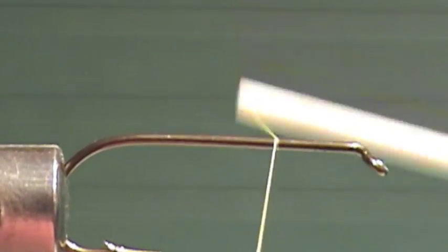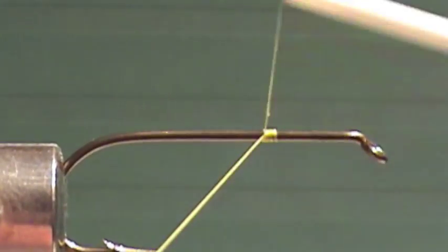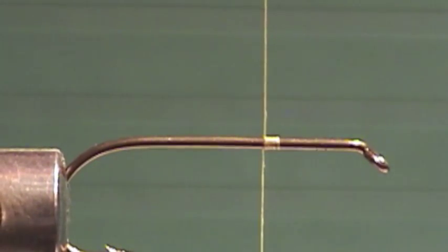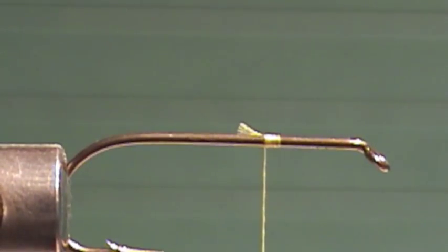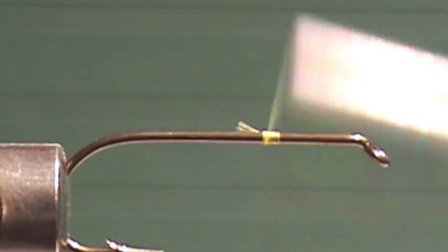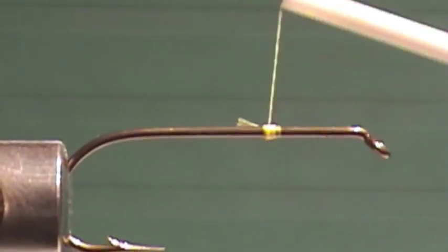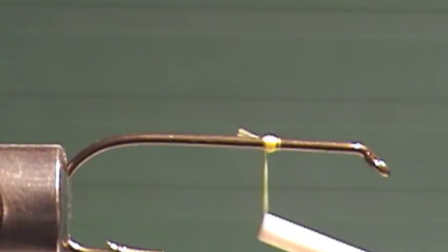I'm going to start my thread back about one third down the shank of the hook. I'm going to create a little ball of thread there. Don't need much, just a slight ball of thread.